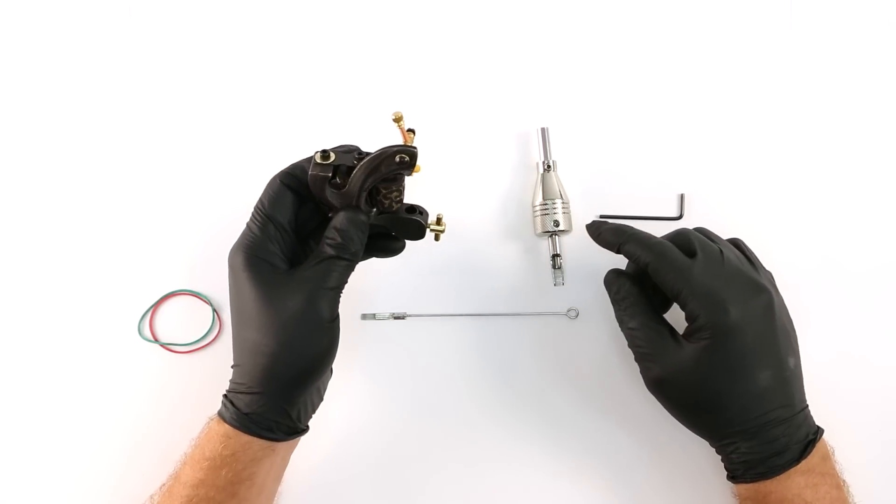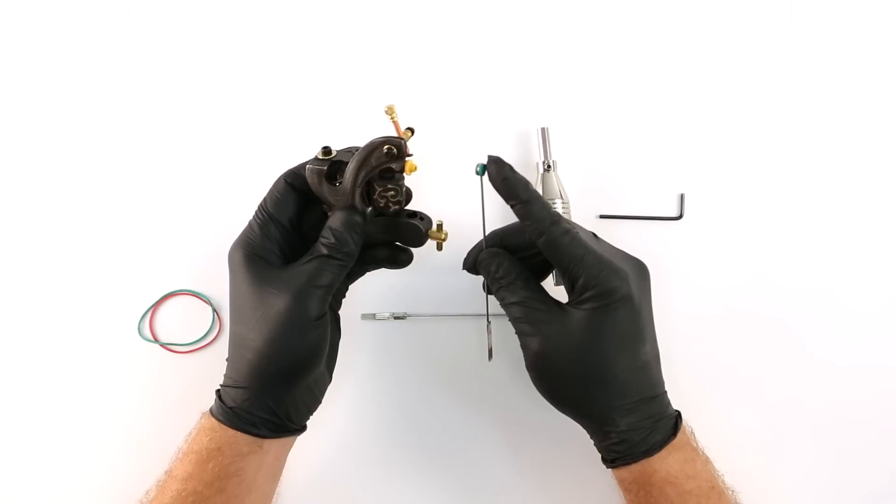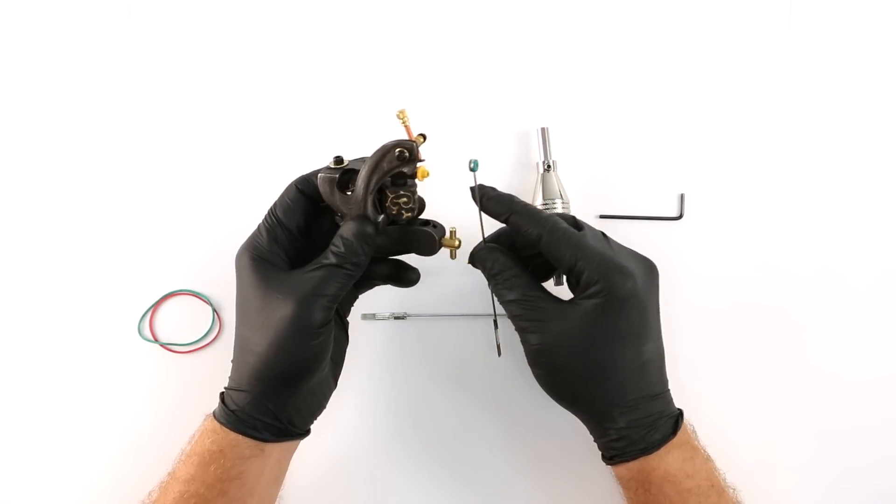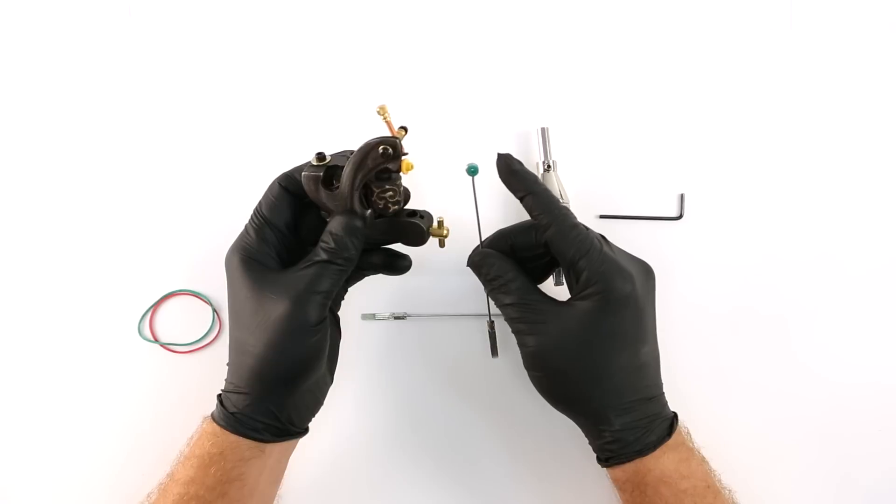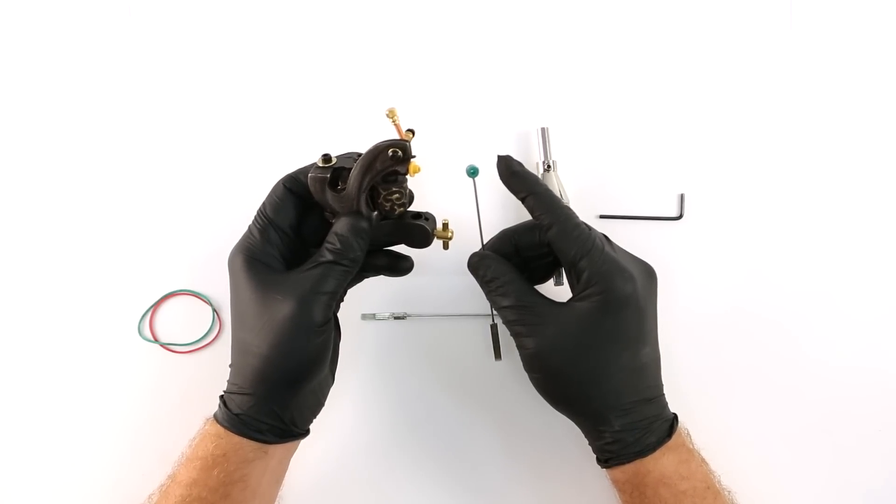A grommet serves the same purpose but it differs from the nipple in that it's inserted into the needle eye first instead of on the A-bar. Grommets are a little bit more difficult to use but they do keep the needle on the A-bar a little tighter than nipples do.